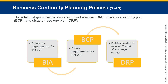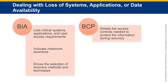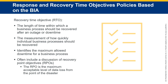DRP policies are needed to recover IT assets after a major outage involving loss of systems, applications, or data. The BIA lists critical systems, applications, and user access requirements, includes maximum downtime, and drives the selection of recovery methods. The BCP details access controls needed to protect information during recovery. Recovery Time Objective (RTO) is the length of time within which a business process should be recovered after an outage. Recovery Point Objective (RPO) is the maximum acceptable level of data loss from the point of disaster.